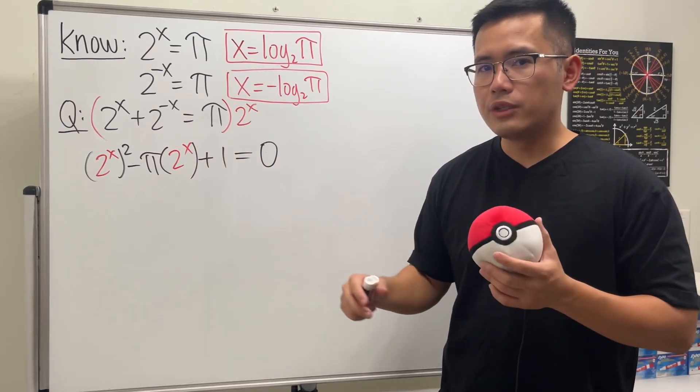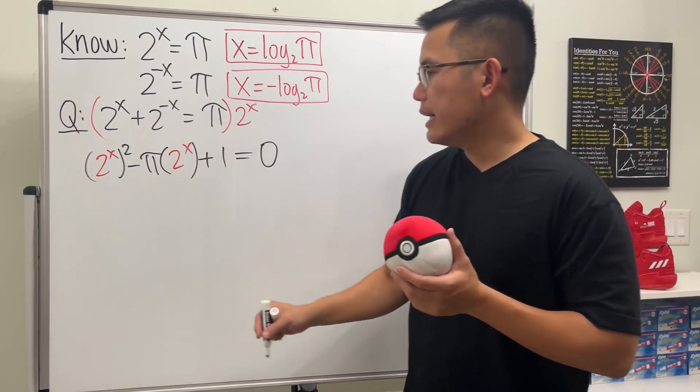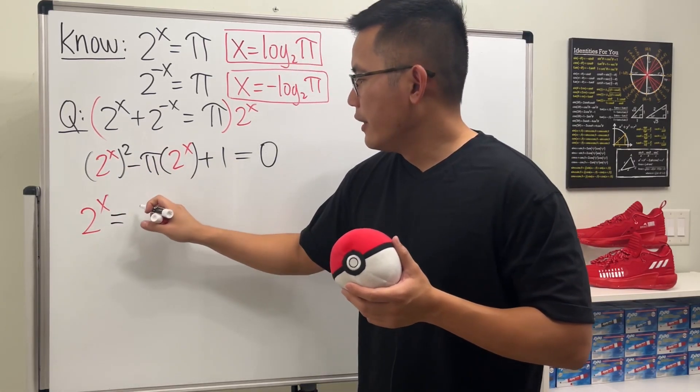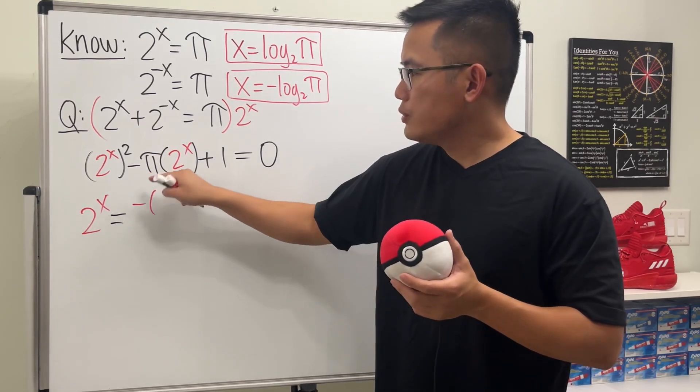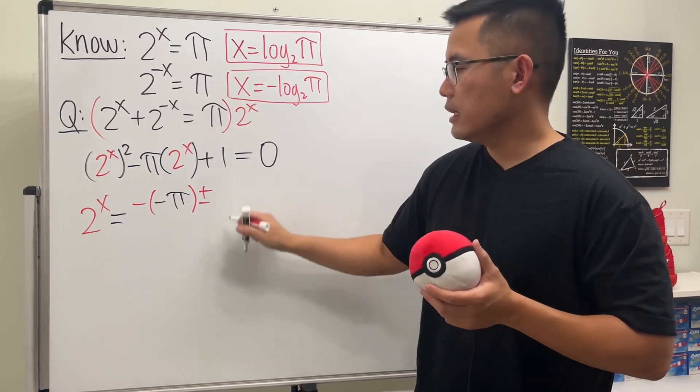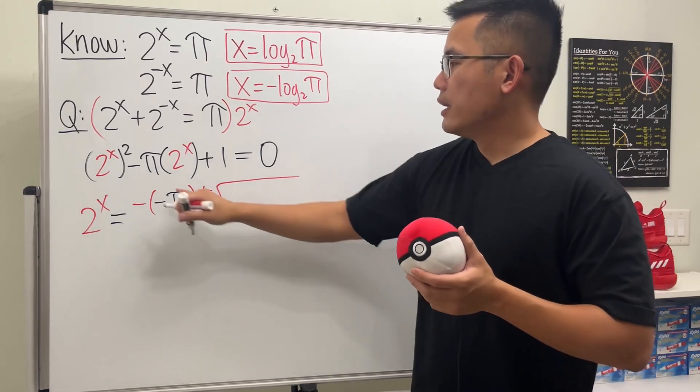So to proceed, we can just use the quadratic formula. And that says the inside, which is 2 to the x, it will be equal to negative b, which is the negative pi here, and then we are going to do the plus or minus, and then square root, negative, well, b squared.